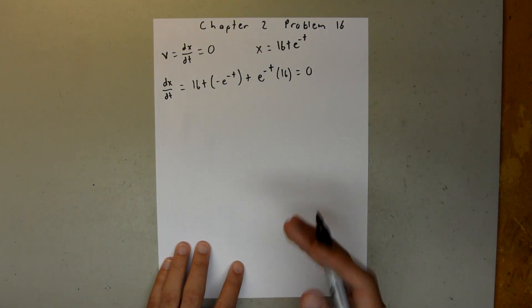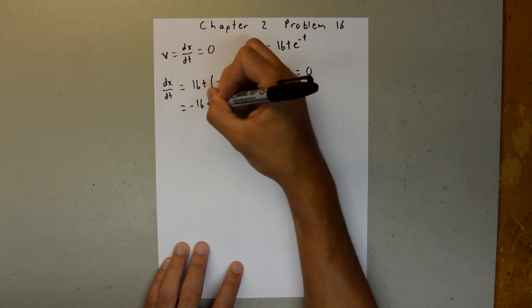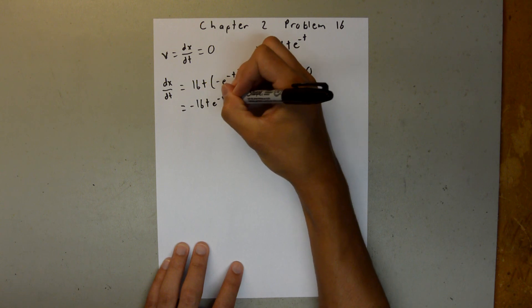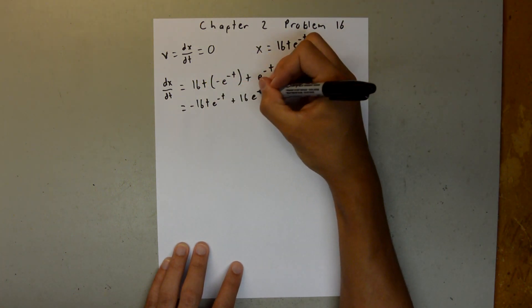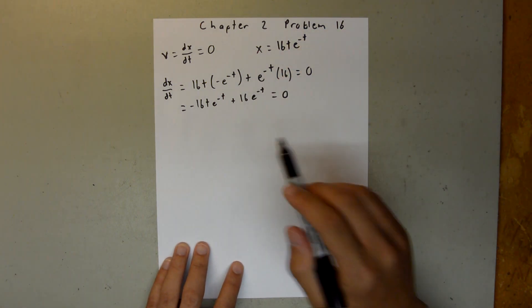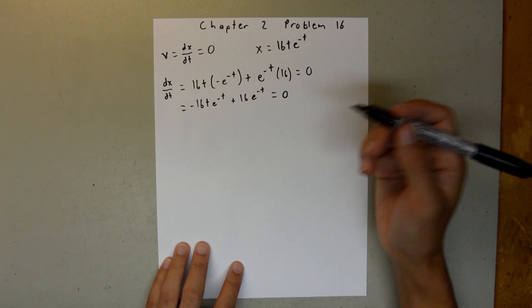So let's kind of clean this up a little bit, and we can say this is equal to negative 16t e to the negative t, plus 16e to the negative t, and that equals 0. And we can see that we have a 16e to the negative t in both, so we can factor that out.